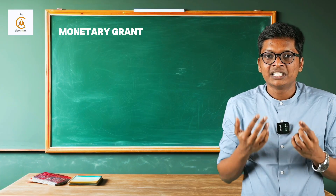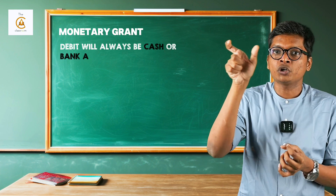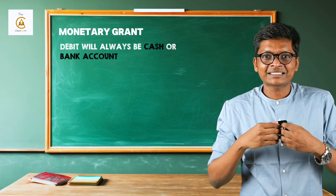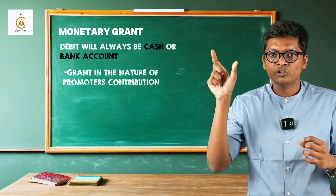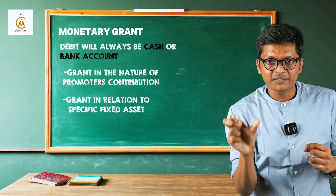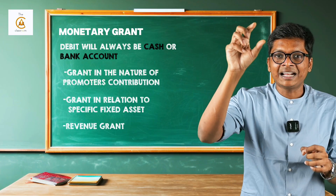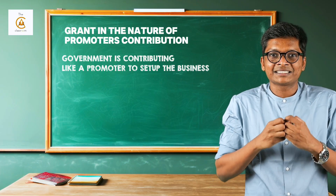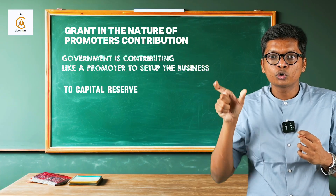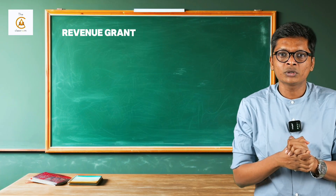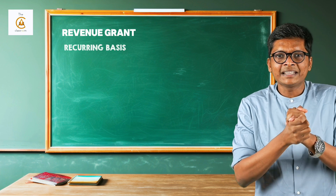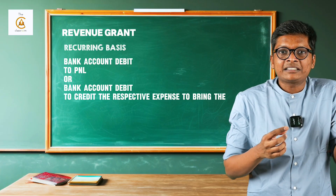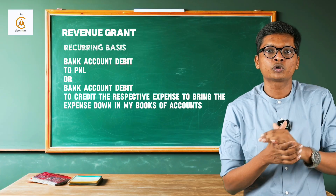Coming to monetary grants - receiving cash means debit will always be cash or bank account. Monetary grants are classified into three parts: grant in the nature of promoters contribution, grant in relation to specific fixed asset, and revenue grants. For promoters contribution, where government contributes like a promoter to set up the business, the entry will be bank account debit to capital reserve. Revenue grants are given on a recurring basis, so the entry is bank account debit to P&L, or credit the respective expense to bring the expense down in the books of accounts.